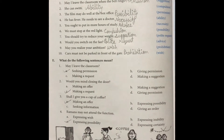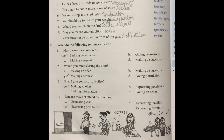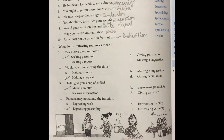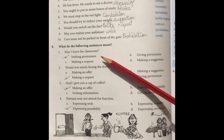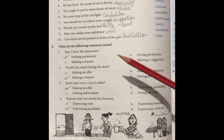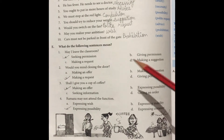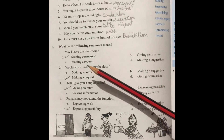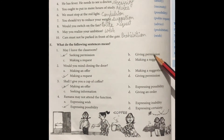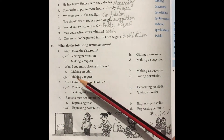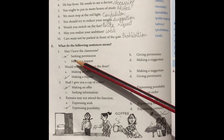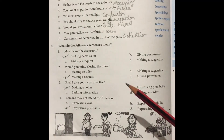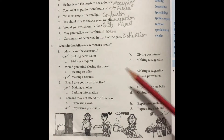Next, Exercise E: 'What do the following sentences mean?' — यहाँ जो sentences दिये गए हैं उनका meaning क्या है. 'May I leave the classroom?' — here we can see that it is permission. Options are: Seeking permission, Giving permission, Making a request, Making a suggestion. Here we can see — Seeking permission, permission ली जा रही है.